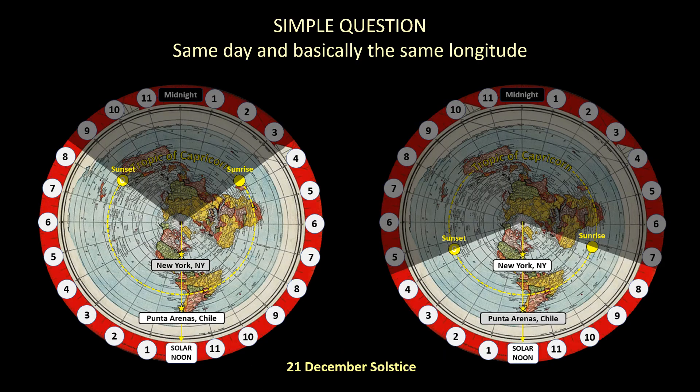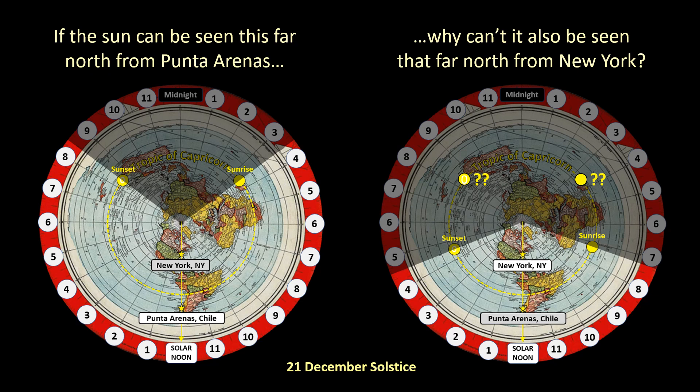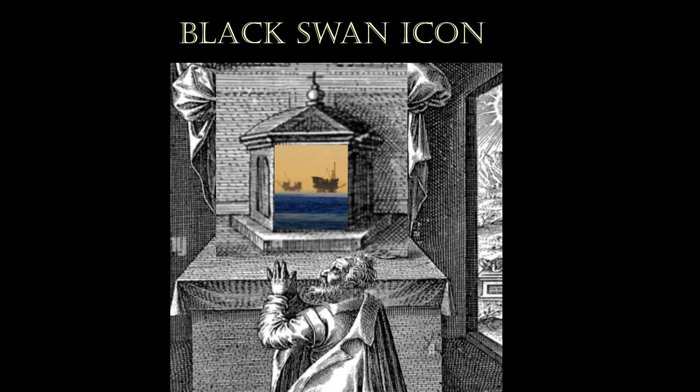And you've got to ask a simple question: here we have the same day and basically the same longitude. So if the sun can be seen this far north from Punta Arenas, why can't it also be seen that far north from New York? I think this is one of the reasons that flat earthers now claim that they don't have either a map or a model, because both are reification fallacies that cannot explain anything that we observe. Of course they can always find solace at their altar of the black swan icon.